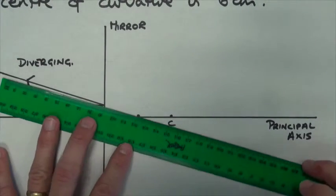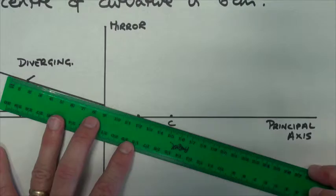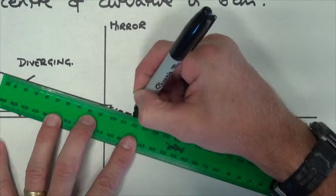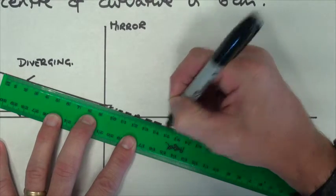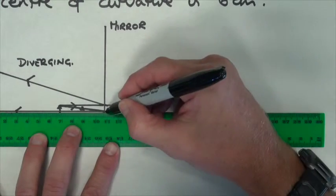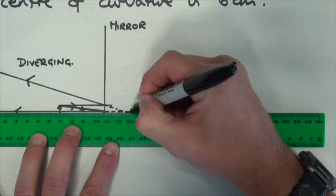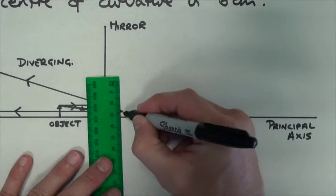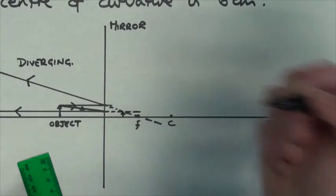So what I'm going to do is track back my reflected rays. So here's my first law. I'm going to track it back using dotted lines. And I'm going to track back my second law, where it went parallel with the principal axis, and where the reflected rays track back and converge is going to be my image. So there's my image.